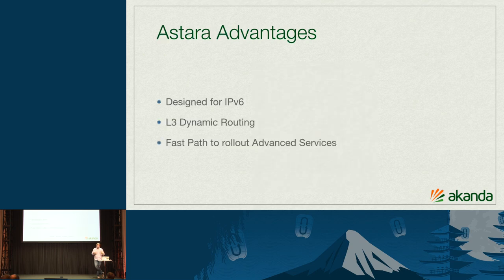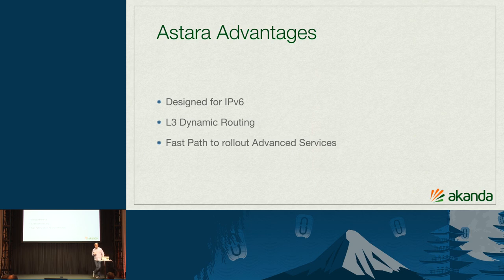One of the differences with ASTARA versus standard Neutron is that from the ground up, ASTARA was designed for IPv6. When we began the project, that was one of our commitments, knowing the world is basically running out of v4 addresses. We also wanted to support dynamic routing — one challenge with v6 even in Neutron today is that dynamic routing is not supported. ASTARA does support BGP and OSPF, and whether your flavor is quagga, bird, or some proprietary solution, ASTARA can handle that.